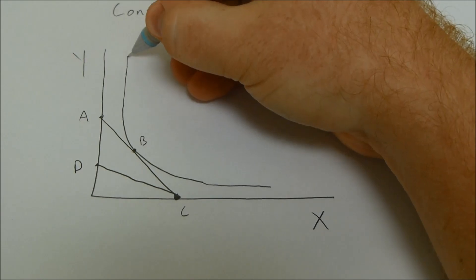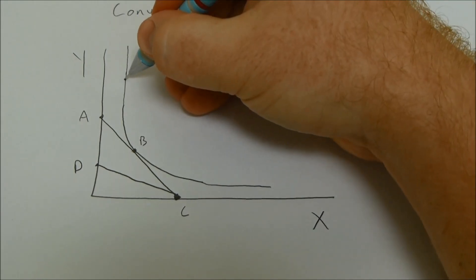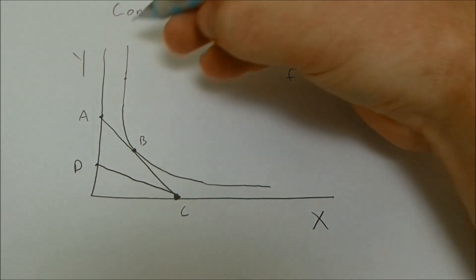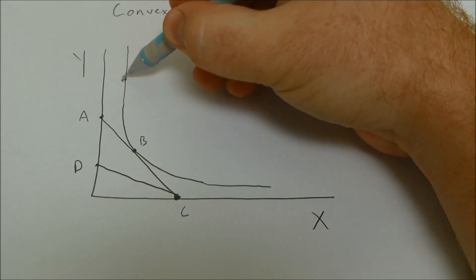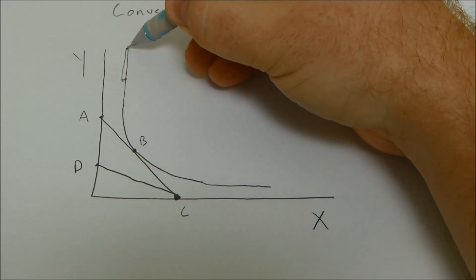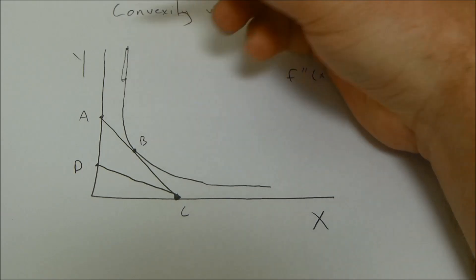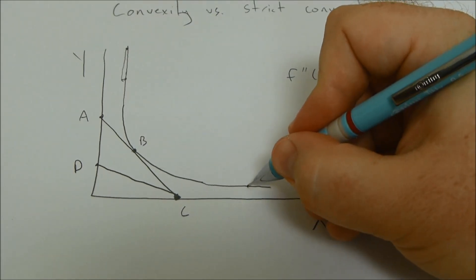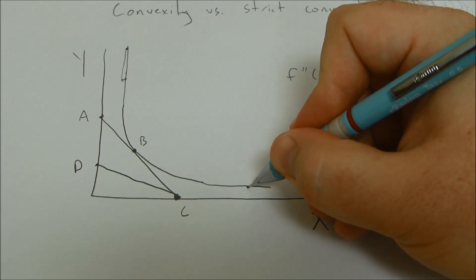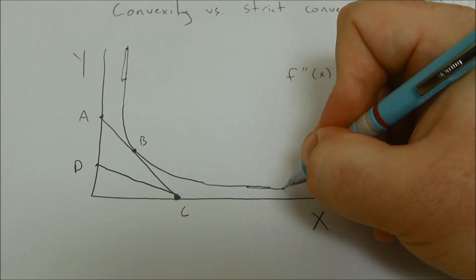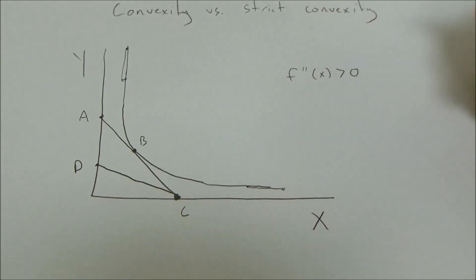We can see that if we want to substitute a little bit of x, we're going to have to get a lot of y. Likewise, if we're over here, we have to get a lot of x to give up a little bit of y.